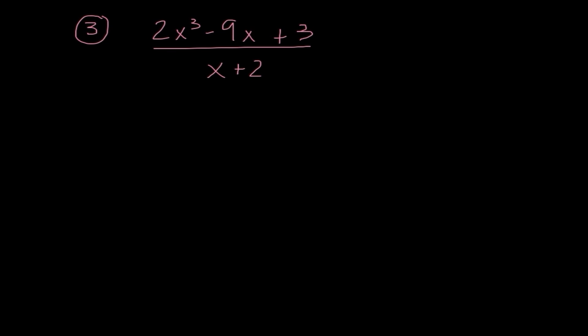Moving right along here to number 3. I'm setting this up and as I start to write out my coefficients, I realize that we are missing something here. So I'm going to have to fill in a 0 for that x squared. So it is really important that I'm always filling in zeros when necessary. My box value here is going to be negative 2 because that is the opposite of this value.